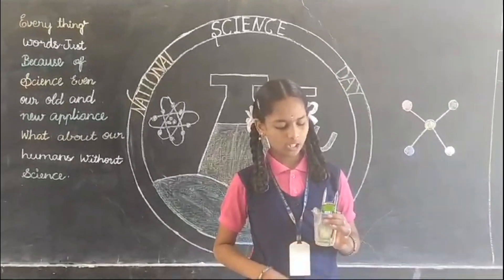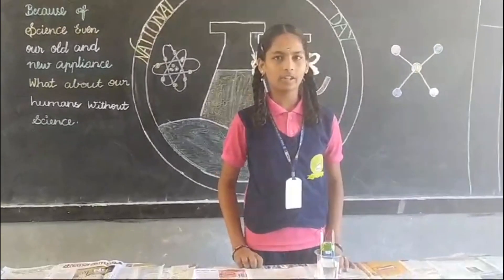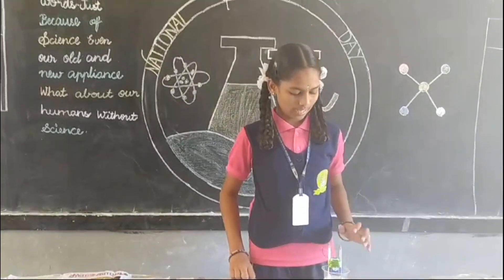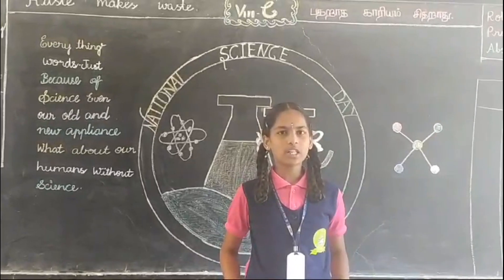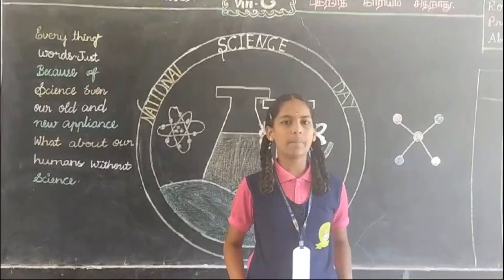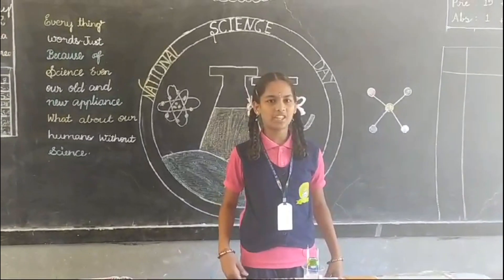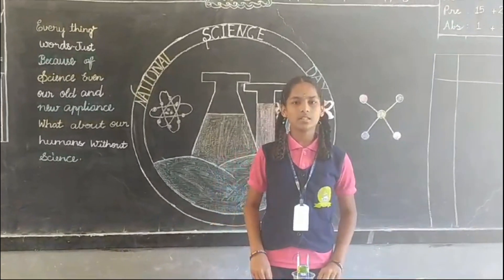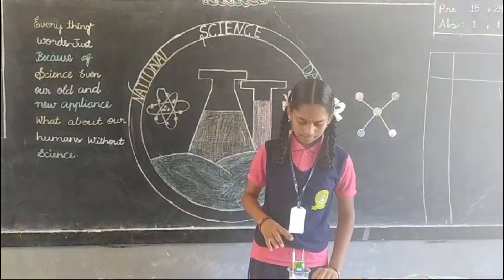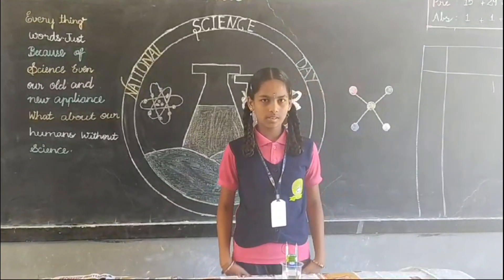The positive electrode is collected at the cathode and the negative electrode is collected at the anode. This experiment shows that water is made up of hydrogen and oxygen. Every two volumes of hydrogen are collected at the cathode and one volume of oxygen is collected at the anode. The ratio of hydrogen to oxygen in water is two to one. Thank you.